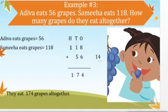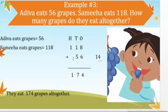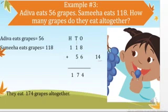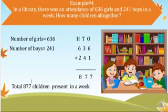Now you can see here there is no other number in the 100th column — only 1 is here. So we write only 1 in the 100th column. So our sum: when we add 118 plus 56, our answer is 174. So they eat 174 grapes altogether.